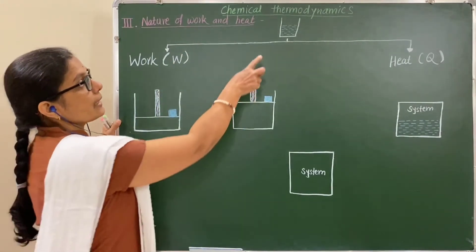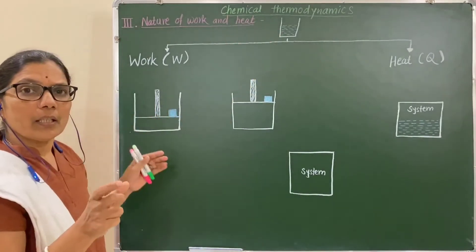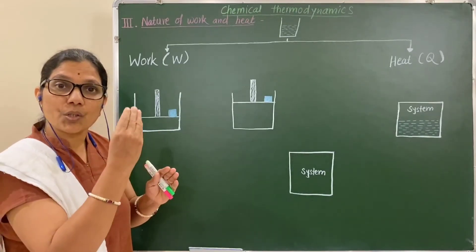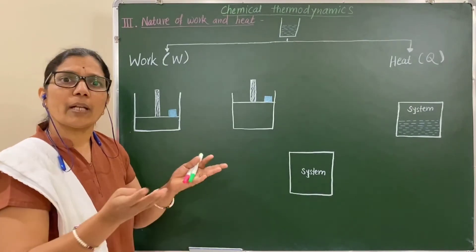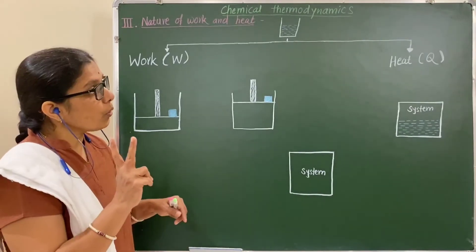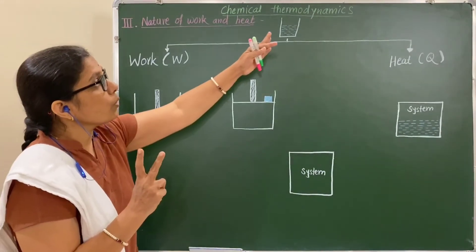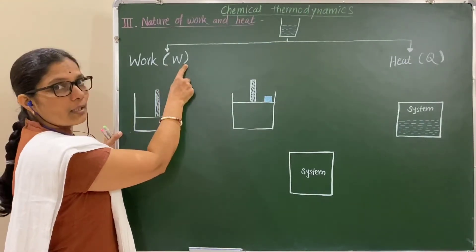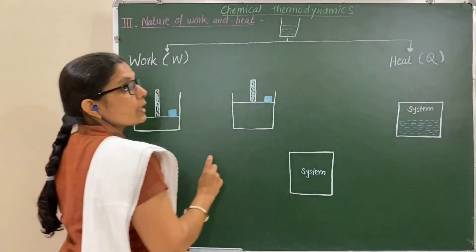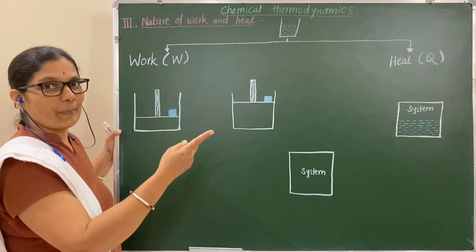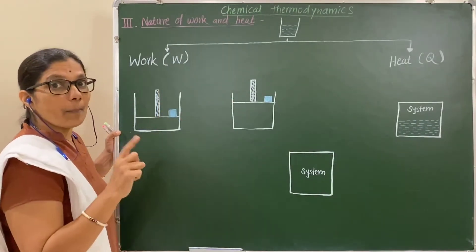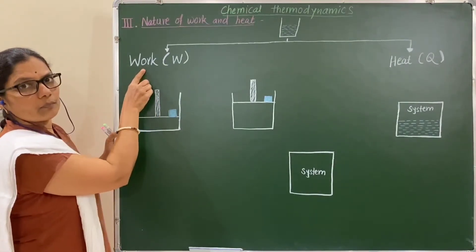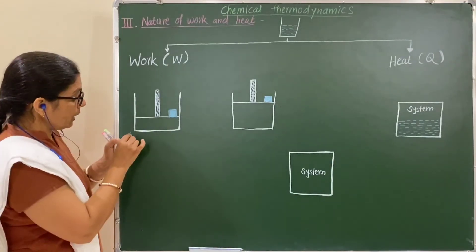Consider this system. You know that each and every system has a definite amount of energy, and that energy can be exchanged with the surroundings in a variety of ways. There are two important ways to transfer energy: either in the form of work, that is W, or in the form of heat, that is Q. Both are path functions.